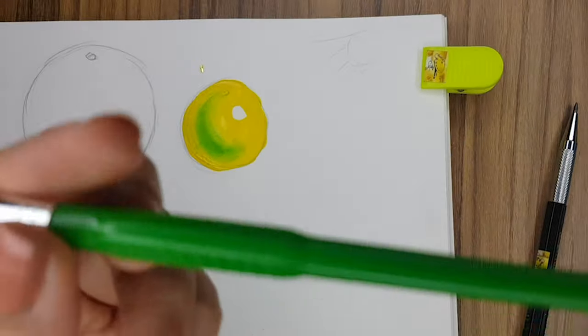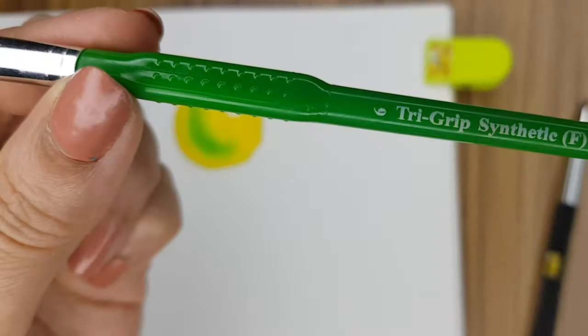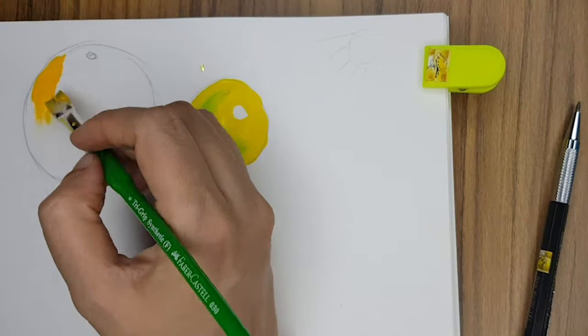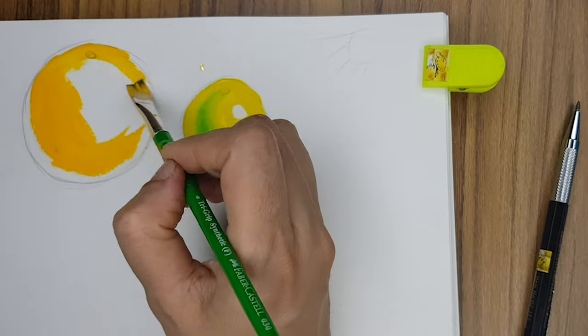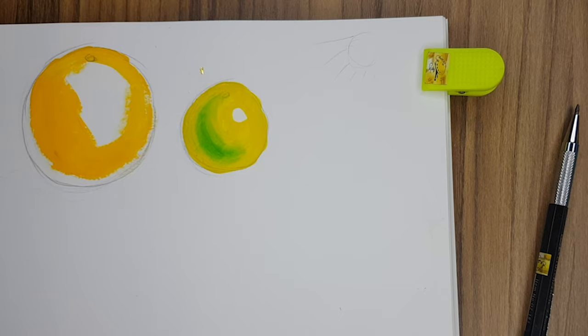Now take a fatter flat brush—here I am using a number 6 flat brush—and take chrome yellow color to color the sweet lime as seen in the video. Then wash your brush, take lemon yellow, and color around the chrome yellow inside as well as outside.